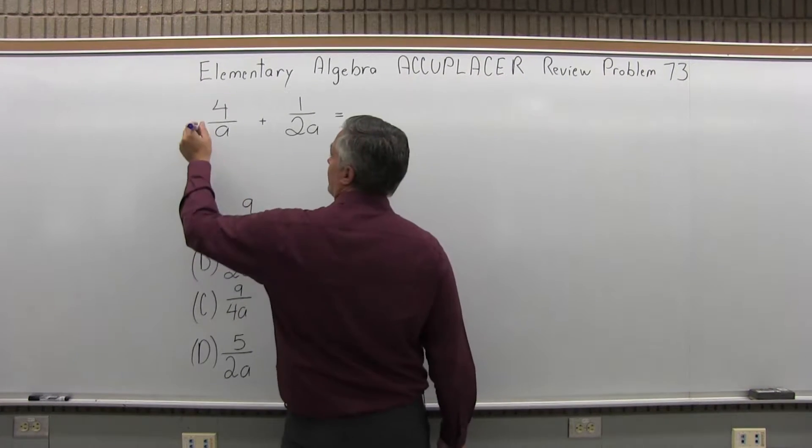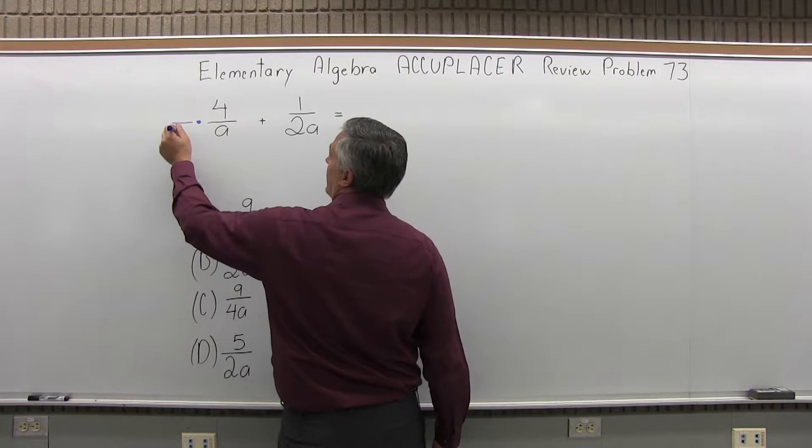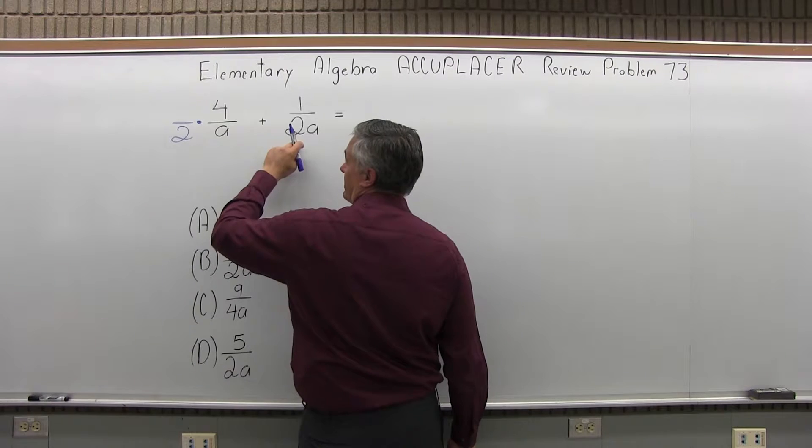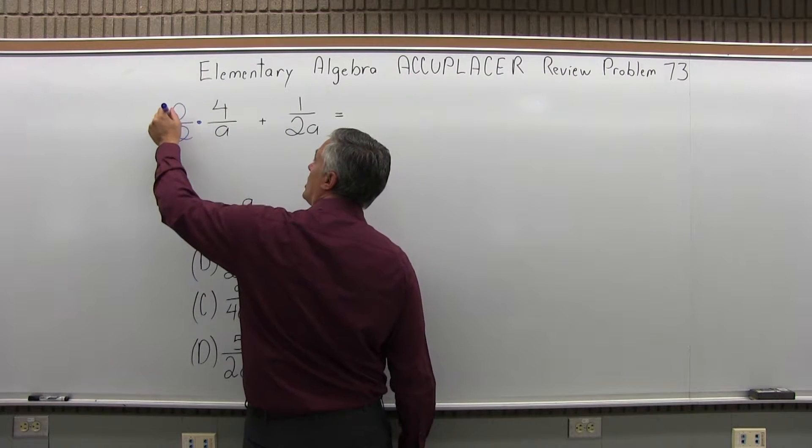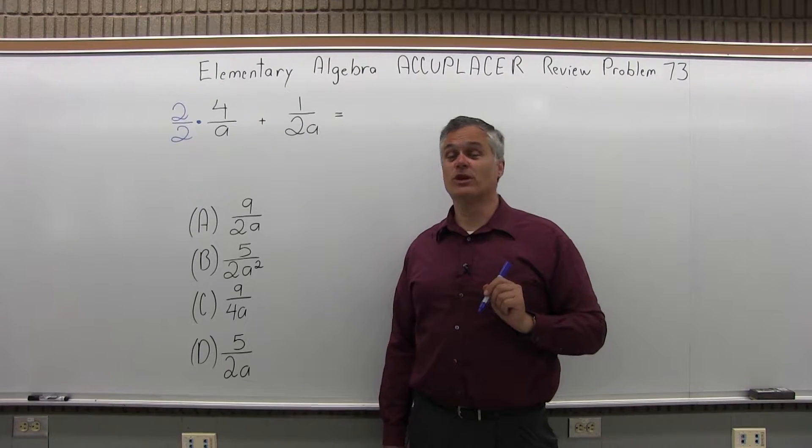If I take the first fraction which has an A as the denominator and multiply it by 2, I'll make 2A. But if I multiply the denominator by 2, I must also multiply the numerator by 2.